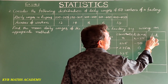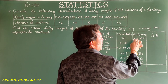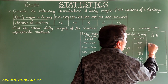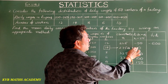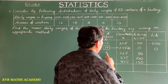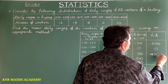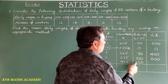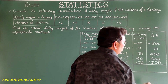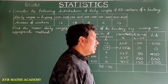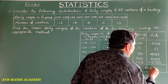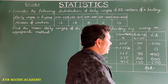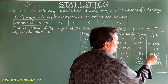Now we calculate fi·di for each row: 12×(−50) = −600, 14×0 = 0, 8×50 = 400, 6×100 = 600, and 10×150 = 1500. Sigma fi·di: −600 and +600 cancel out, leaving 400 + 1500 = 1900. So sigma fi·di = 1900.